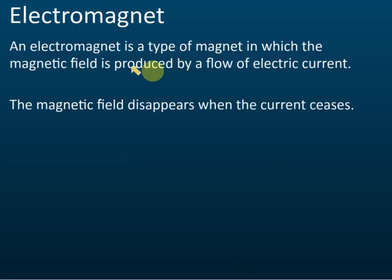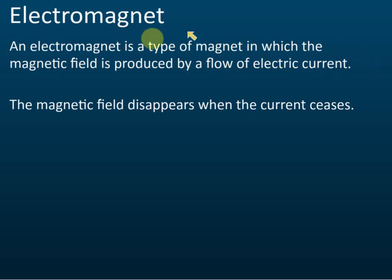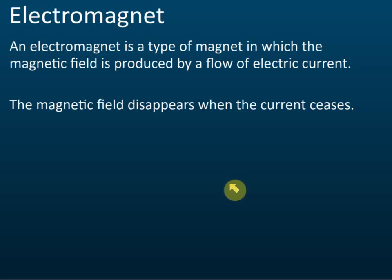An electromagnet is a type of magnet in which the magnetic field is produced by a flow of electric current. You need to memorize these definitions. All conductors of electricity can be magnets — they don't need to be ferromagnetic. As long as there's a current flow, it's a magnet.